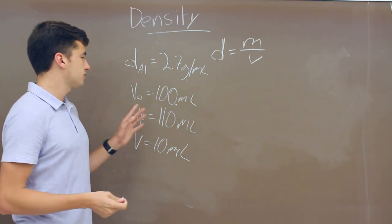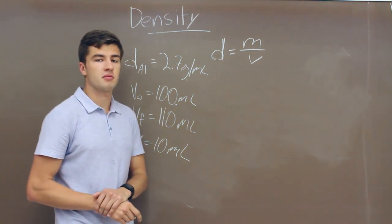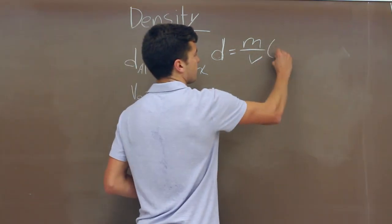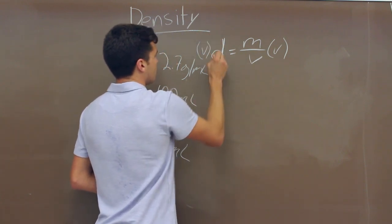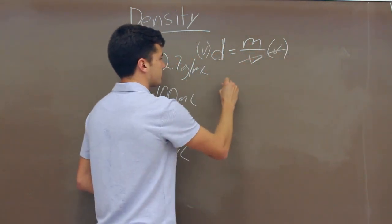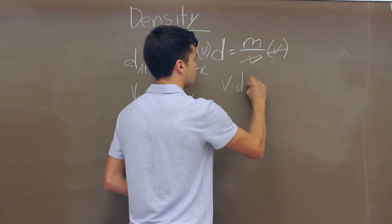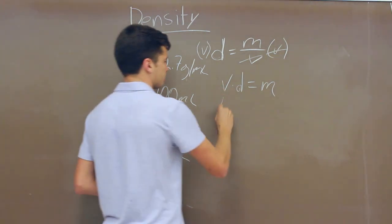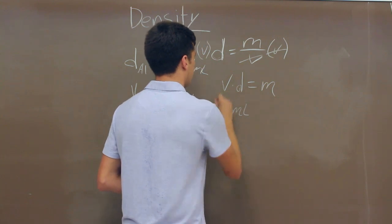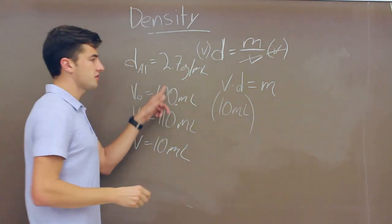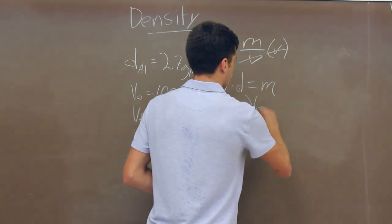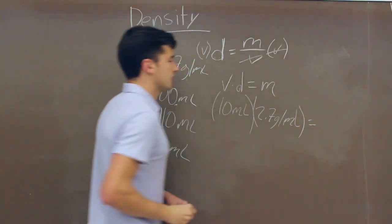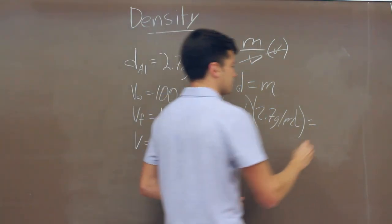We can use these two variables to solve for our mass, but first we have to rearrange the equation. We'll do this by multiplying both sides by V — these cancel out, so we get mass by itself: volume times density equals mass. The volume is 10 milliliters and the density is 2.7 grams per milliliter, so the mass of our object is 27 grams.